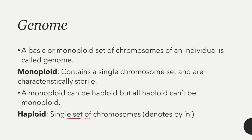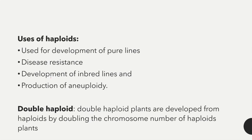The uses of haploid are: it is used for the development of pure lines, for disease resistance, for the development of inbred lines, and for the production of aneuploids. Aneuploidy is a condition where two or more chromosomes are added or subtracted from the somatic set of chromosomes.